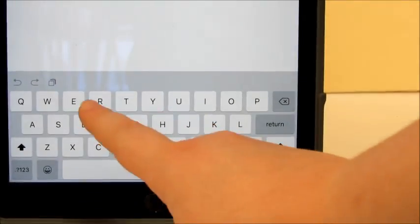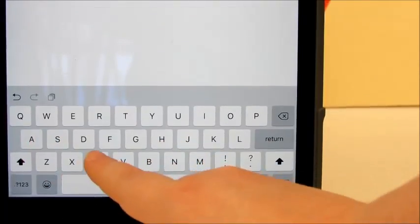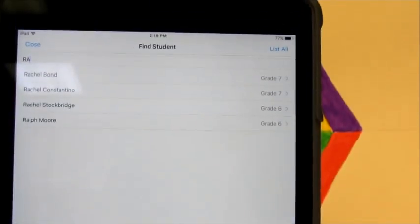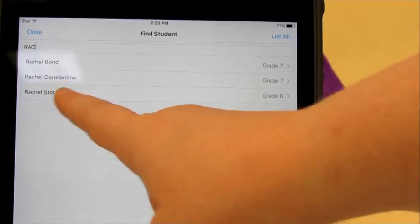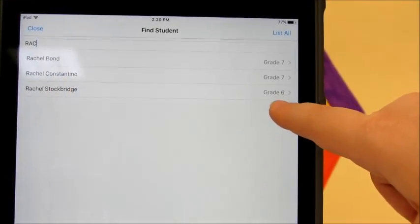At this point you can use the keyboard at the bottom of the page to type in your name. You'll see a bunch of names showing up at the top. Make sure you select the correct name. Check to make sure it's the right grade level.